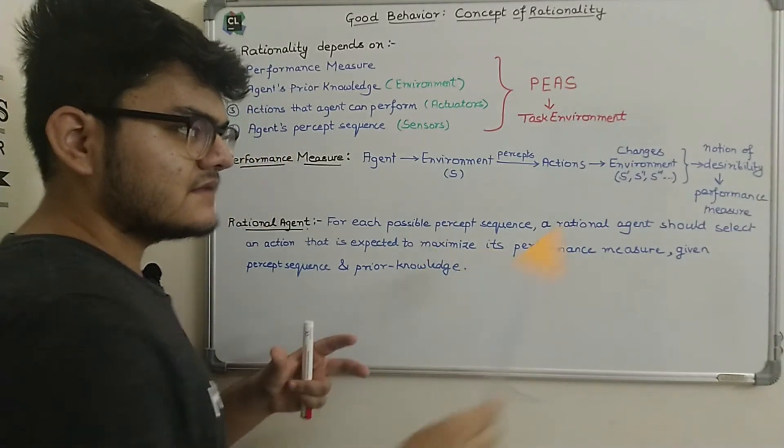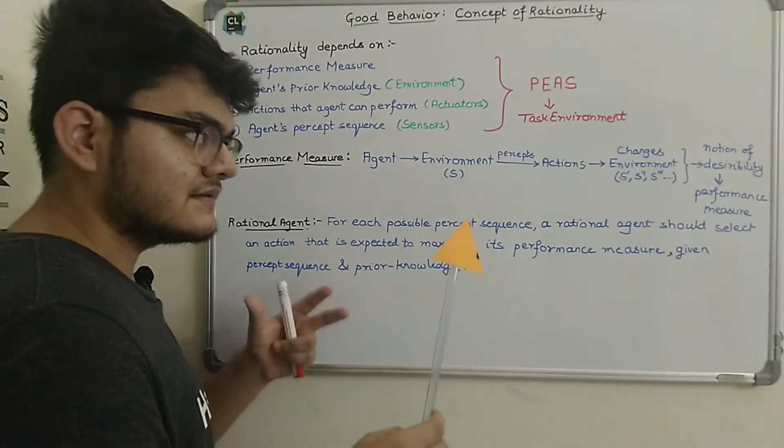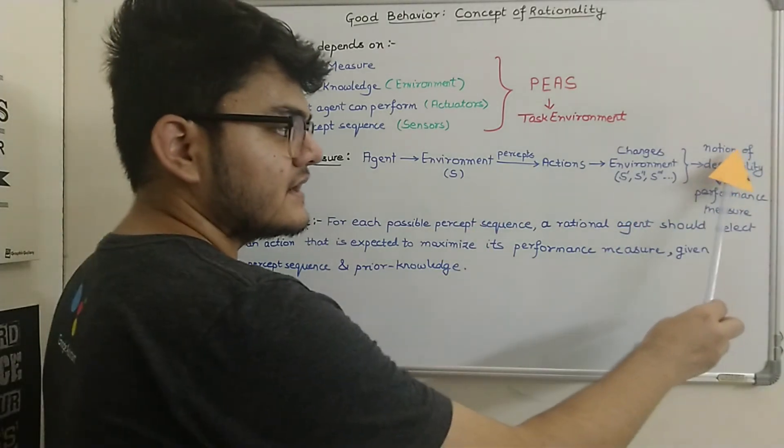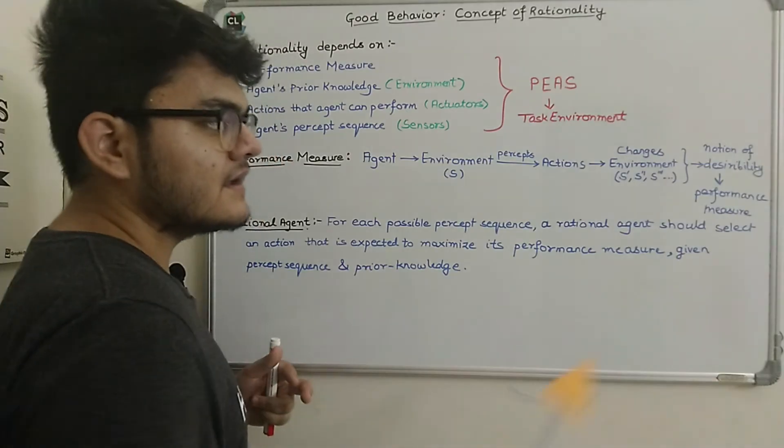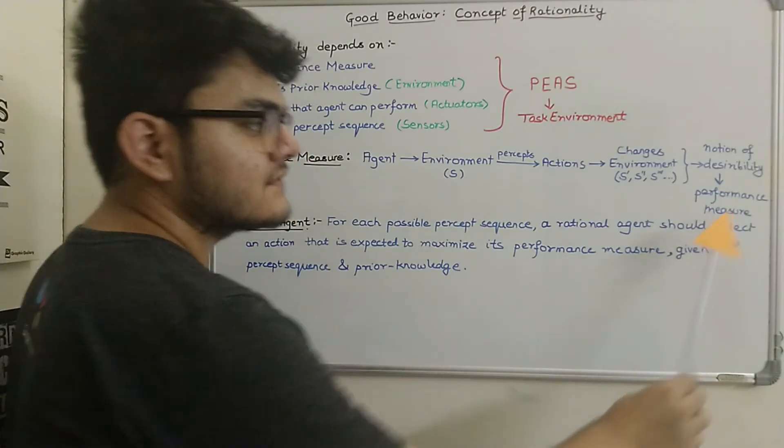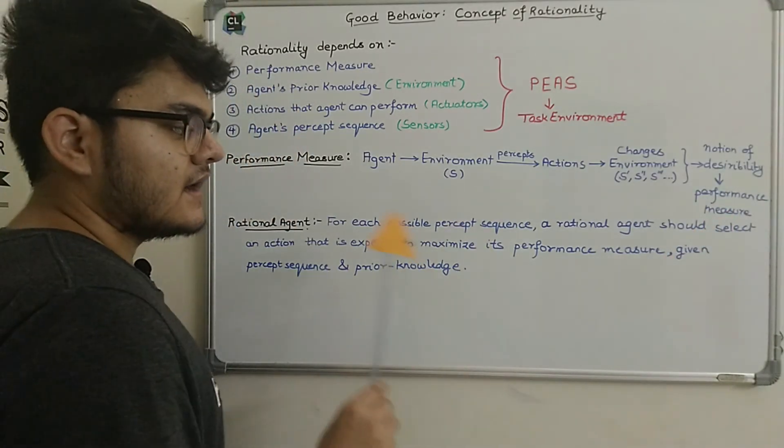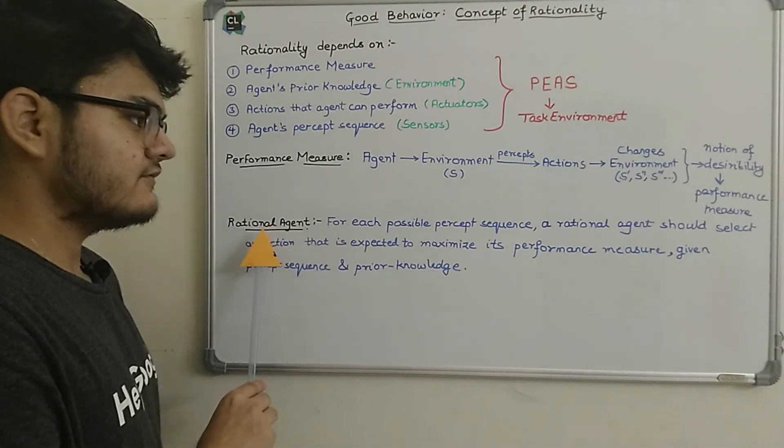this is known as the notion of desirability. So this basically just means that wherever you are making some changes, if these are the desired changes, we call it as a notion of desirability. And this notion of desirability determines the performance measure of the AI agent. And now you can see we have defined here what is a rational agent.